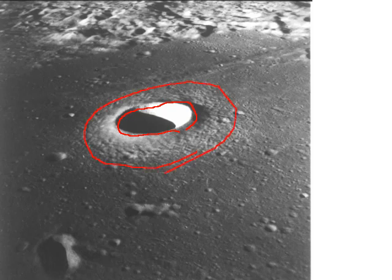Notice the ejecta — it is a lighter-colored material out around this crater. So we have this large simple crater, and notice that we have other craters here as well.